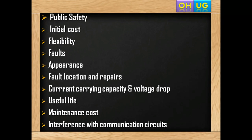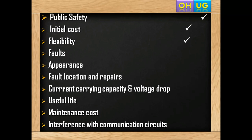As shown in the comparison table, for public safety the underground system is better. Initial cost is very less for overhead lines. Overhead lines are more flexible than underground. For faults, there are fewer faults in the underground system. For appearance, underground is very good. For fault location and repairs, underground is not good.